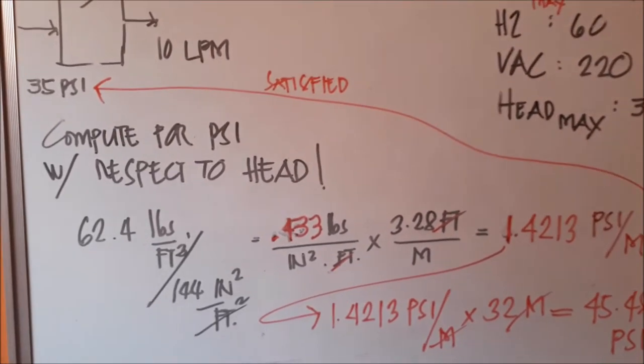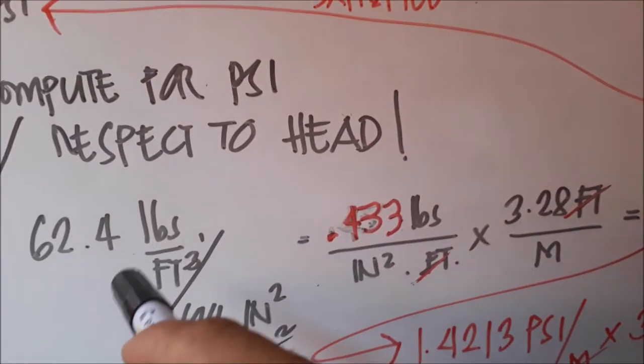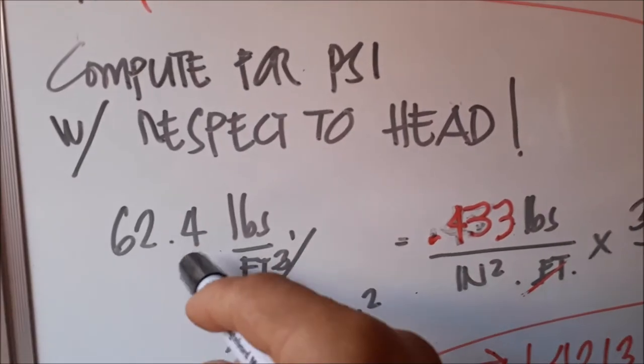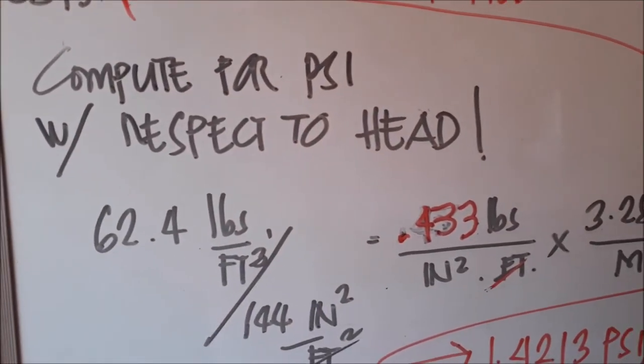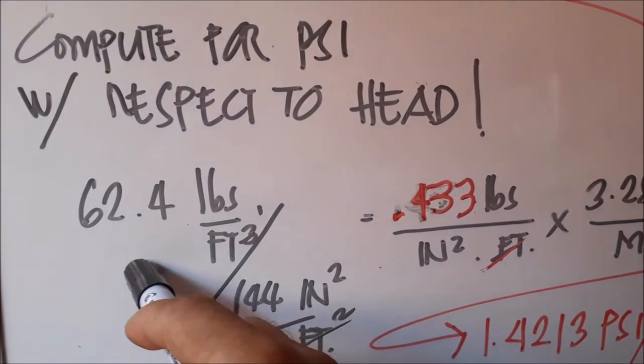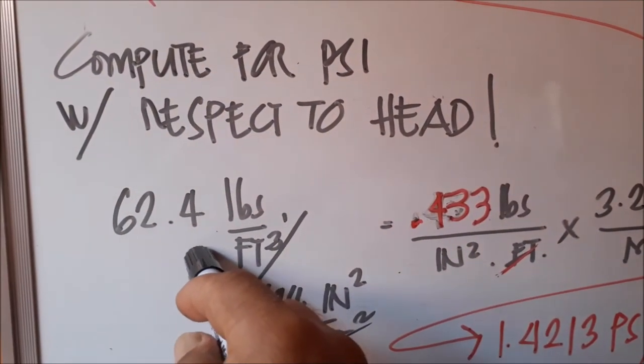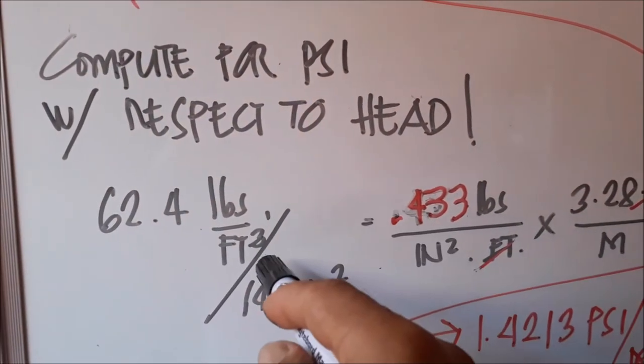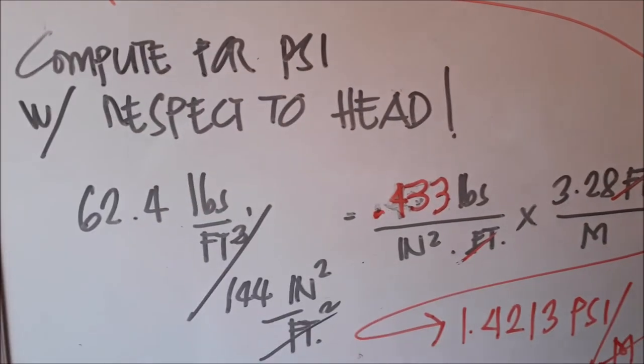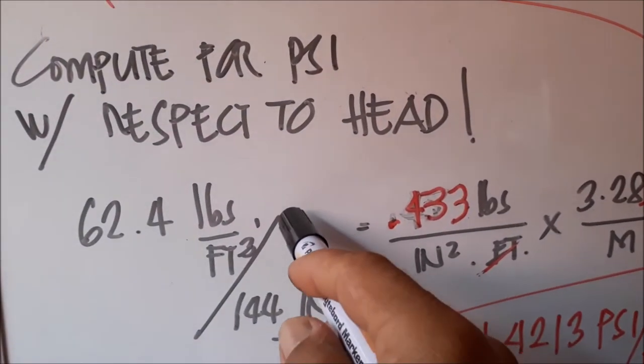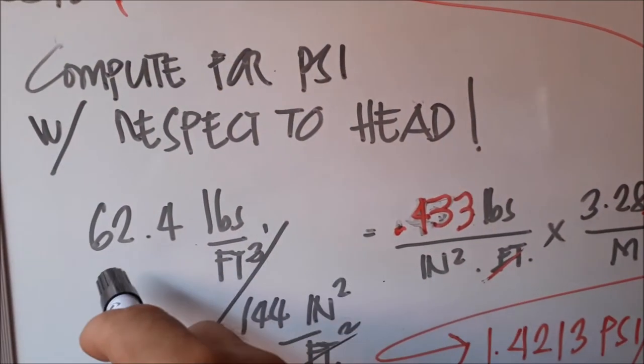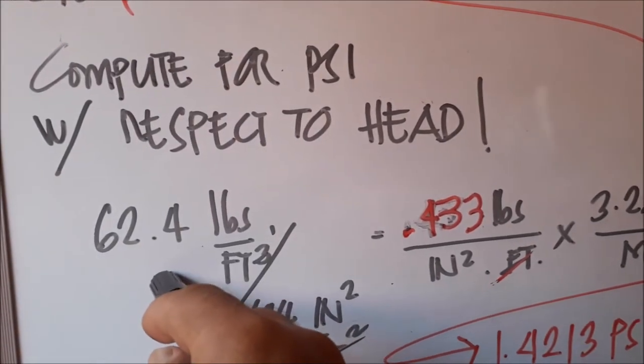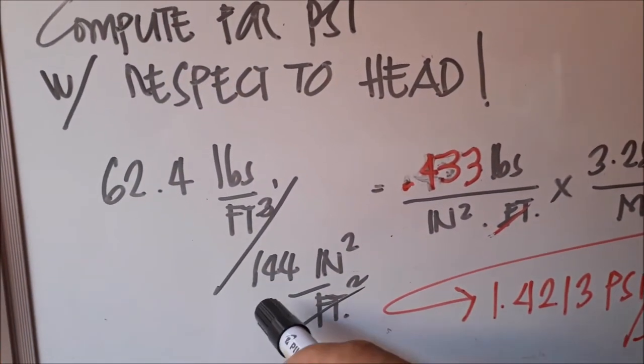Before that, we have the density of water. Because the head of water is what creates the pressure. We have 62.4 pounds per cubic feet. That means in one cubic foot, the weight of water is 62.4. Divide it by 144 square inches per square foot.